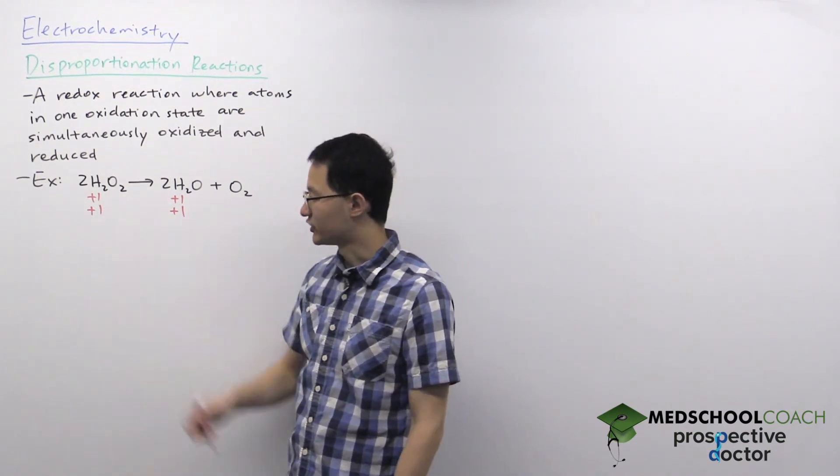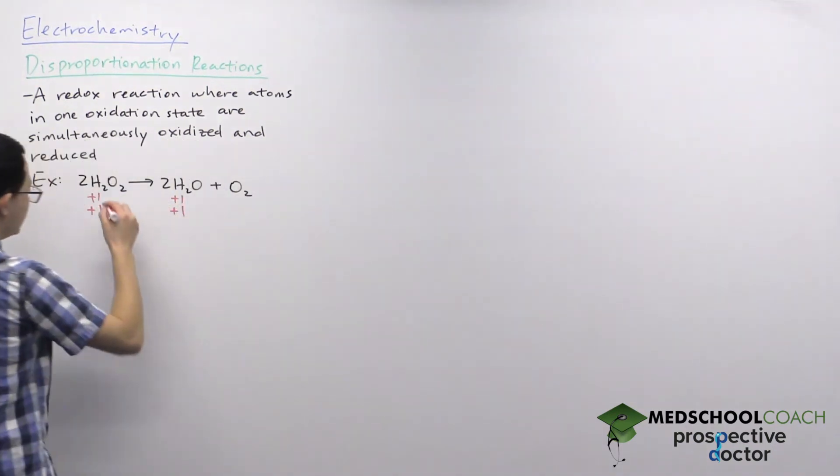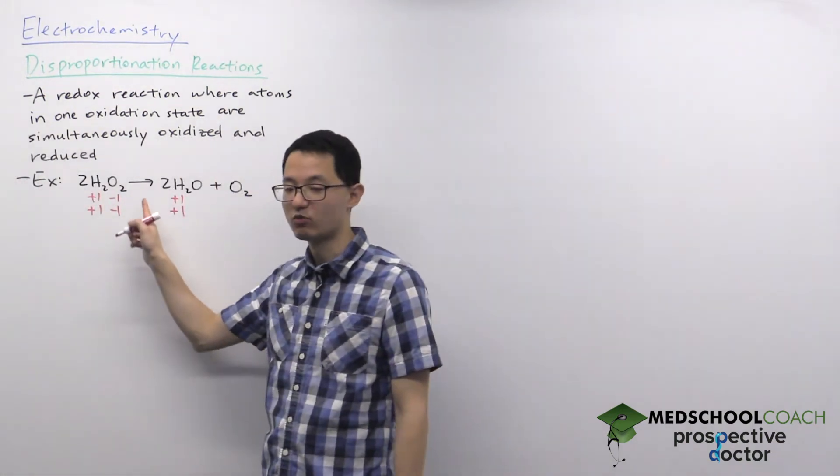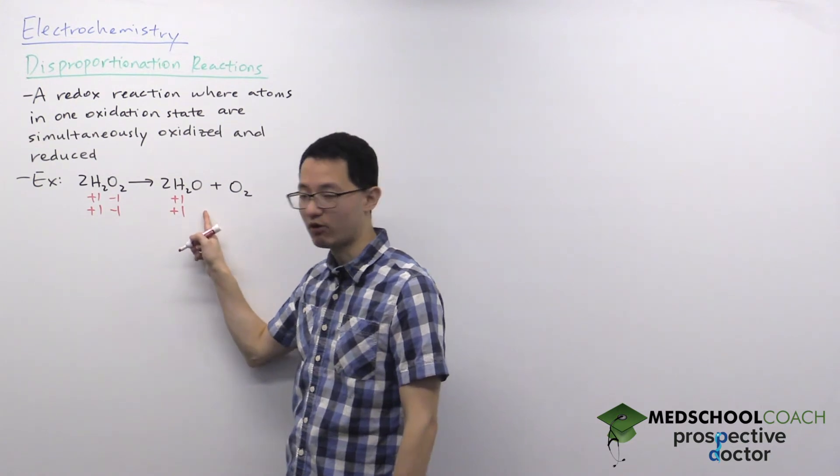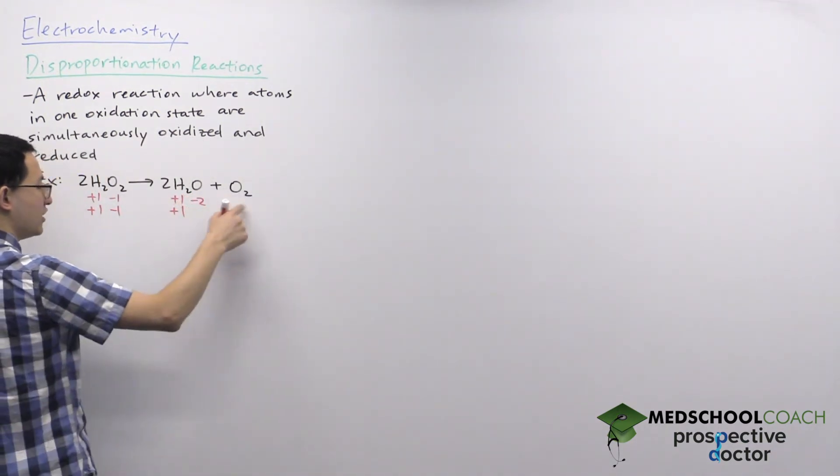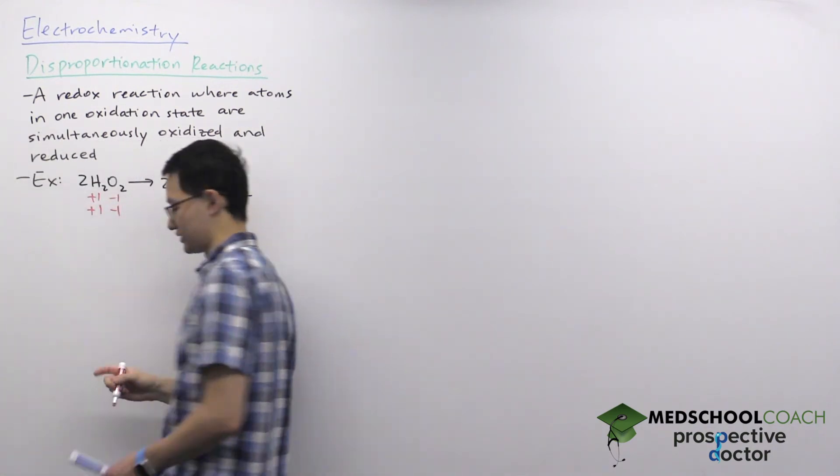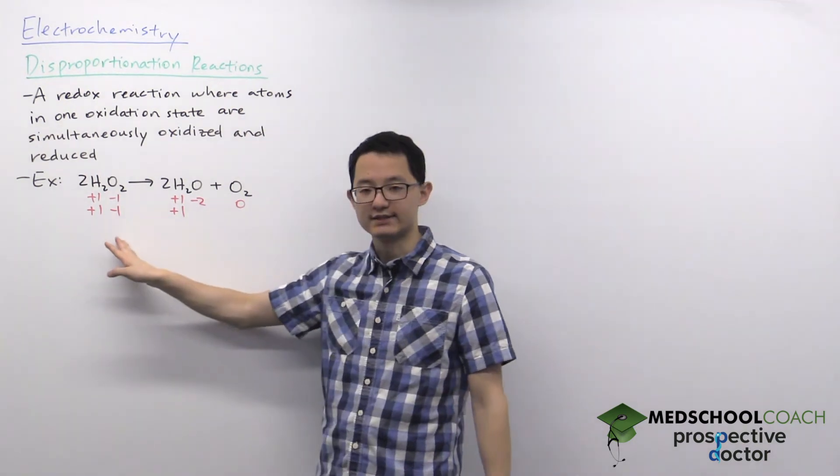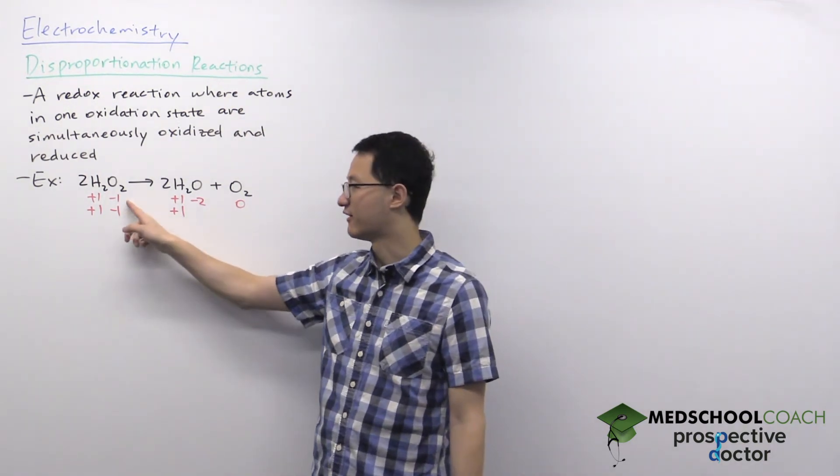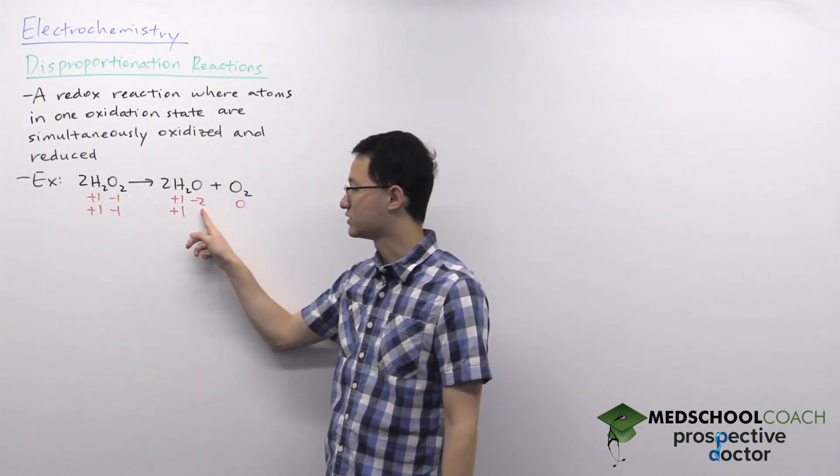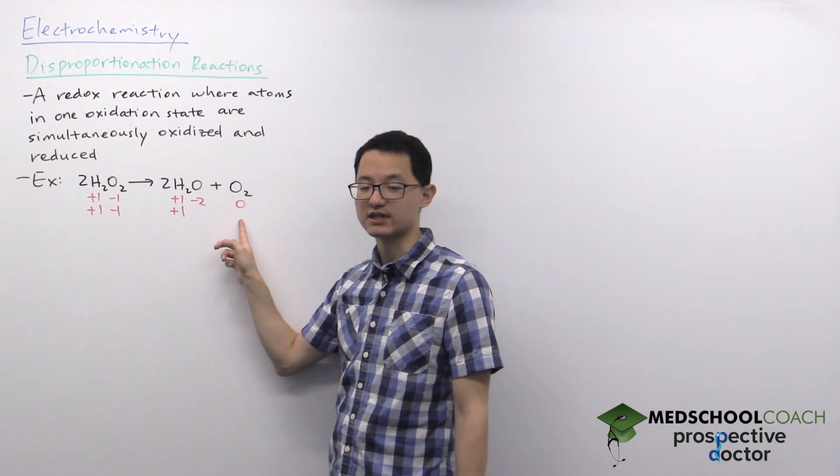If we take a look at oxygen though, in hydrogen peroxide oxygen has an oxidation state of minus one. In O2, oxygen has an oxidation state of zero. So you can see in the reactants oxygen has an oxidation state of minus one. But in the products some of the oxygens have an oxidation state of minus two and others have an oxidation state of zero.